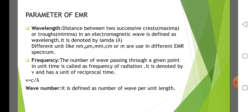Parameter of electromagnetic radiation — Wavelength. The distance between two successive crests (maxima) and troughs (minima) in an electromagnetic wave is defined as wavelength. It is denoted by lambda. Different units like nanometer, micrometer, millimeter, centimeter, and meter are used in different regions of the electromagnetic radiation spectrum.